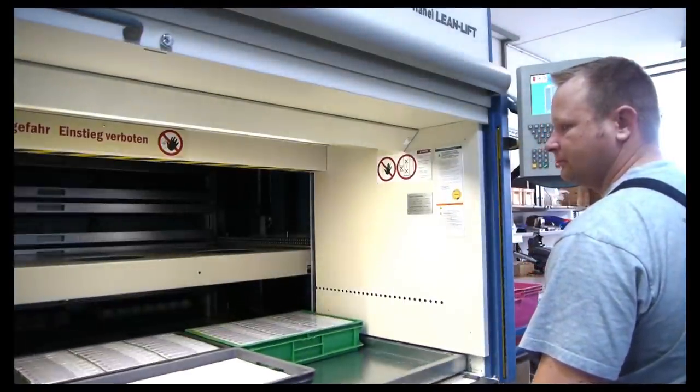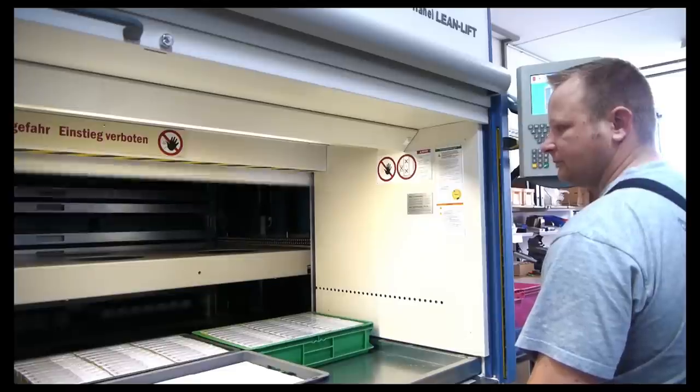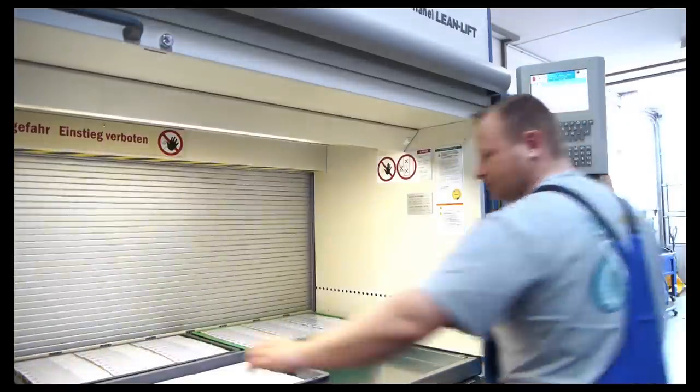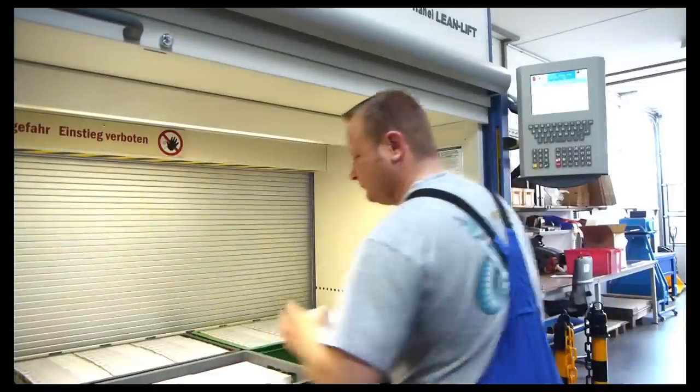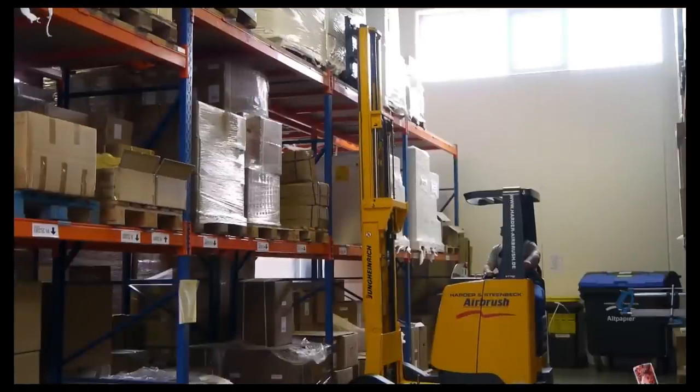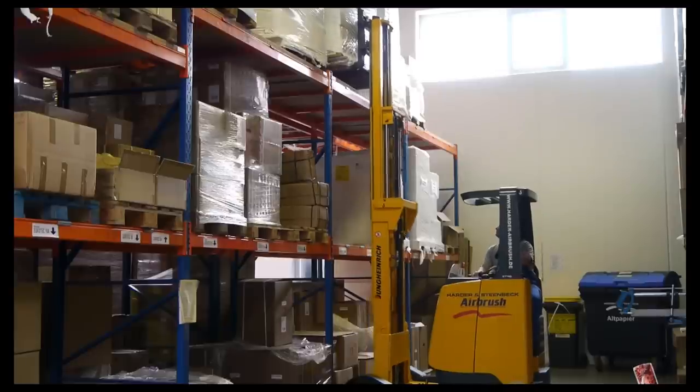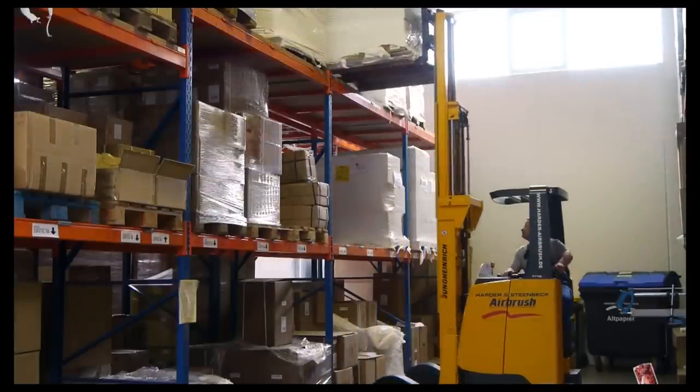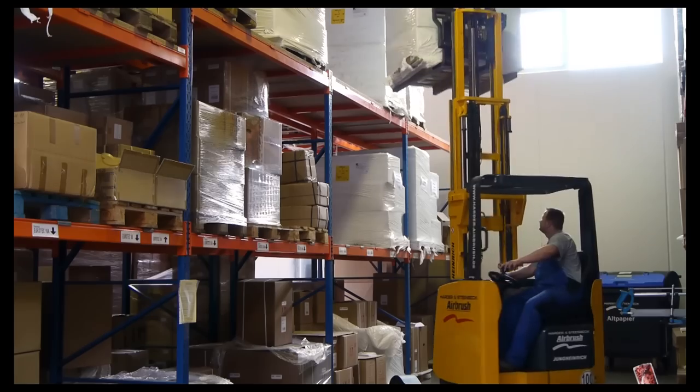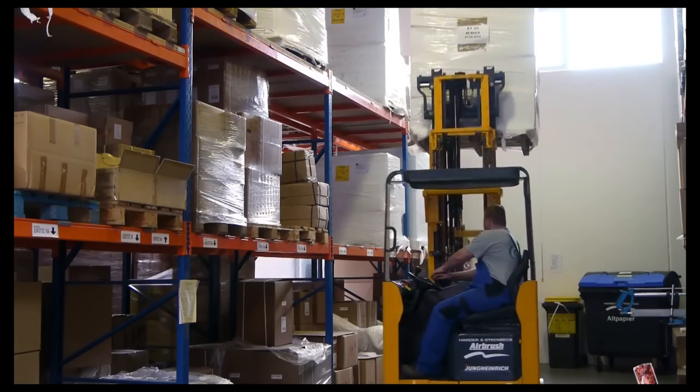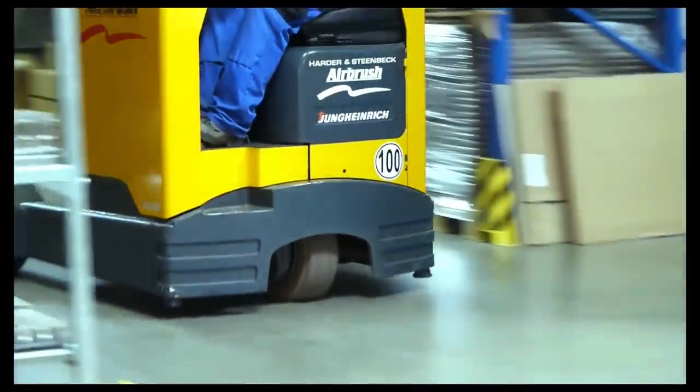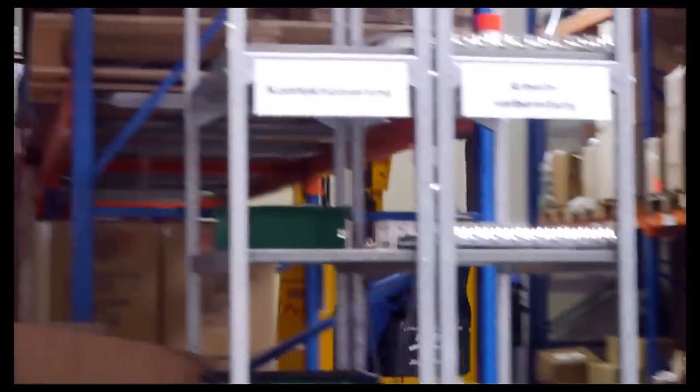If a certain product is about to run out of stock, the system will automatically report that supplementary production or reordering is required. Larger items such as compressors, which cannot be stored with a storage lift, find their place inside the high racks covering about 1,000 square meters. Thanks to their optimized storage management, Hader and Steenberg are able to supply their retailers all over the world in the shortest amount of time.